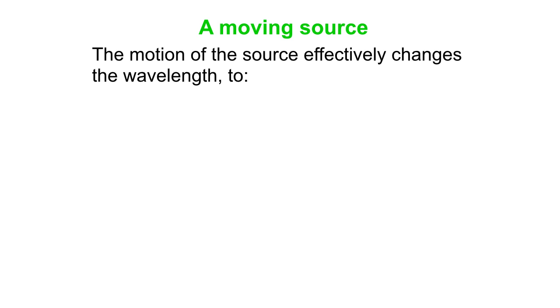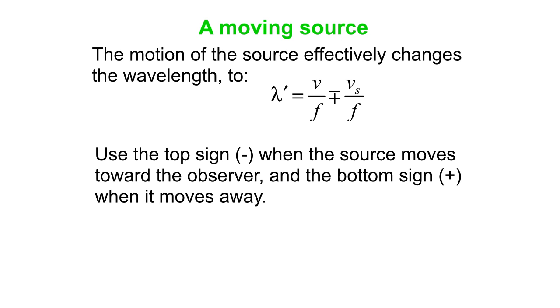Okay, so for the moving source, we're effectively changing the wavelength. You can see the wavelength shrink on the side that the source is moving toward. And it expands on the other side, the side where the source is moving away from. Okay, so we have an effective shifted wavelength. We'll call it lambda prime. That's V minus or plus Vs over F. And again, use the top sign when the source moves away. Sorry, it's very important. Use the top sign when the source moves toward the observer and the bottom sign when it moves away.